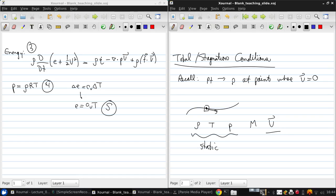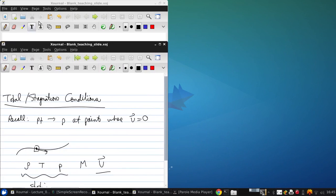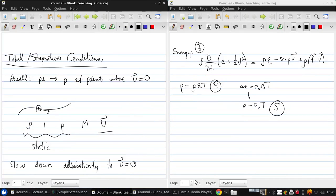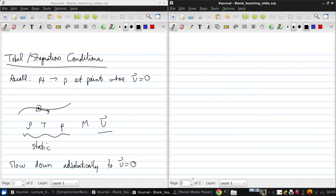Now if we slow the fluid down adiabatically to zero velocity, so therefore we're not doing any heat transfer during that deceleration process, then the temperature that we get after bringing the fluid to rest in that manner is what we call the total or stagnation temperature.